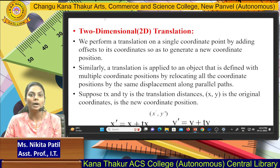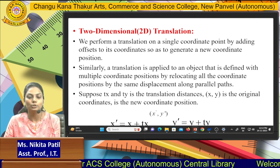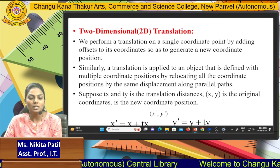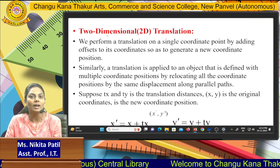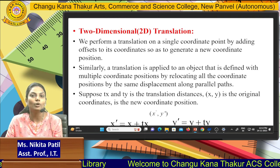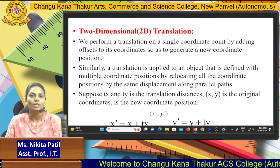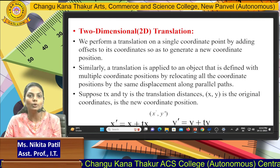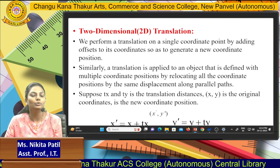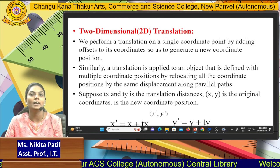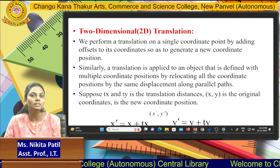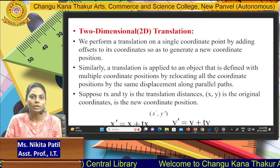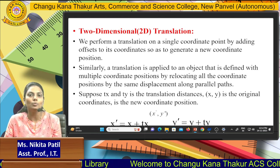Similarly, a translation is applied onto an object defined with multiple coordinate positions by relocating all coordinate positions by the same displacement along a parallel path. Suppose tx and ty are the translation distances for the coordinates x and y — these are the original coordinates and the new coordinate position. By adding the new translation values for your x and y axis, your image will be translated — or shifted — to a new position. That is translation.